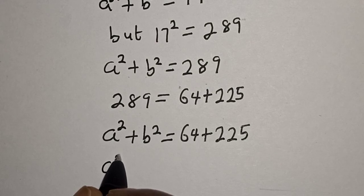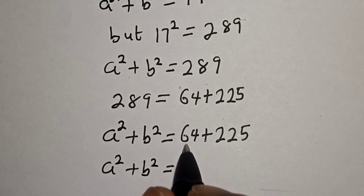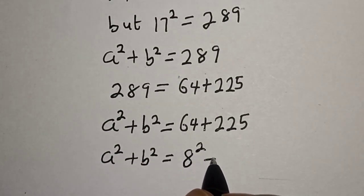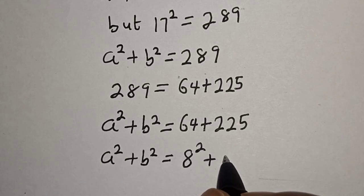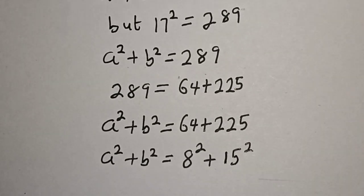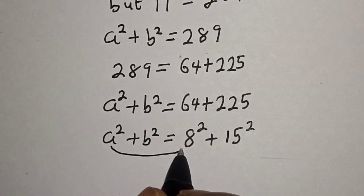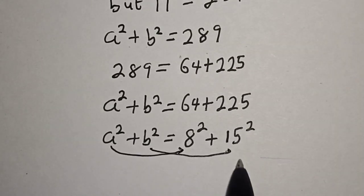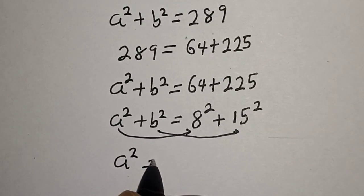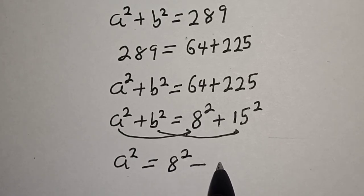Then we have a squared plus b squared is equal to 64, which can be written as 8 squared, plus 225, which can also be written as 15 squared. We can then compare term by term: a squared is equal to 8 squared.